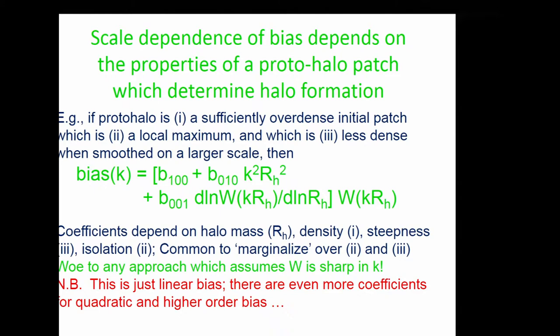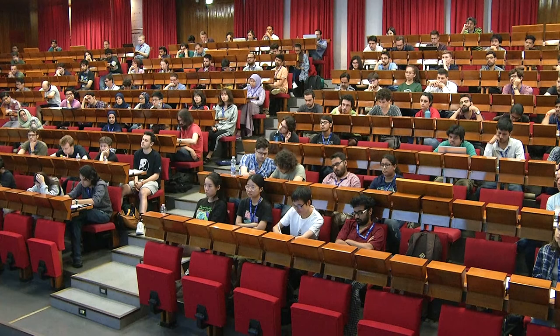Note that what appears naturally is the smoothing scale used to define an object — halos are not point masses but have finite extent, and that smoothing window appears in everything. Next week, in effective field theory, sharp cuts in k-space will be used; you should think carefully about whether such a sharp cut is an essential feature or an artefact of the formalism.